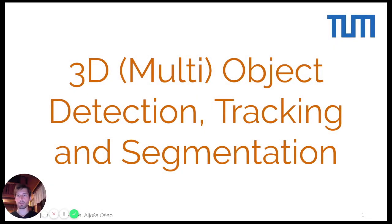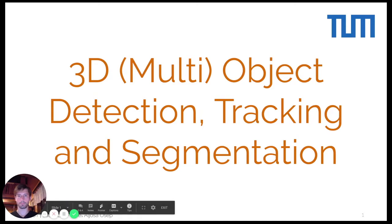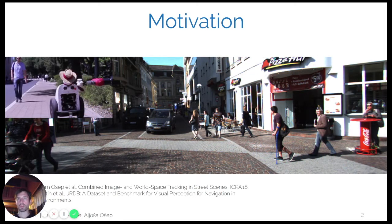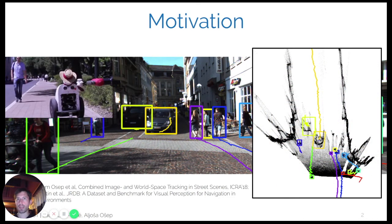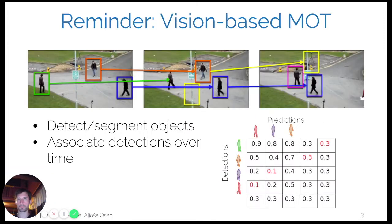Hi everyone, my name is Saljoša and I'm a postdoc at the Dynamic Vision and Learning Group at Technical University of Munich. Today I'll be talking about 3D object detection, tracking, and segmentation. Robots need to detect and track objects to navigate around the world, and in real-world robotic scenarios it is vital that we understand where exactly objects are in 3D space and how they move. Only this way can they react to obstacles in time and ensure safety. One of the key perception tasks is 3D multi-object tracking.